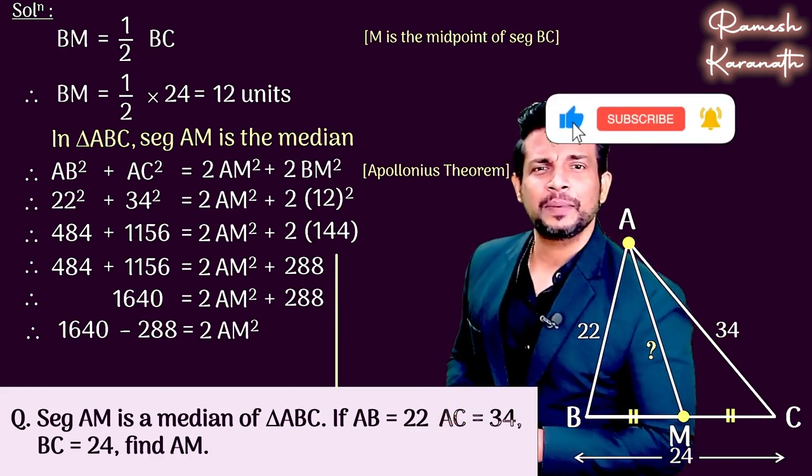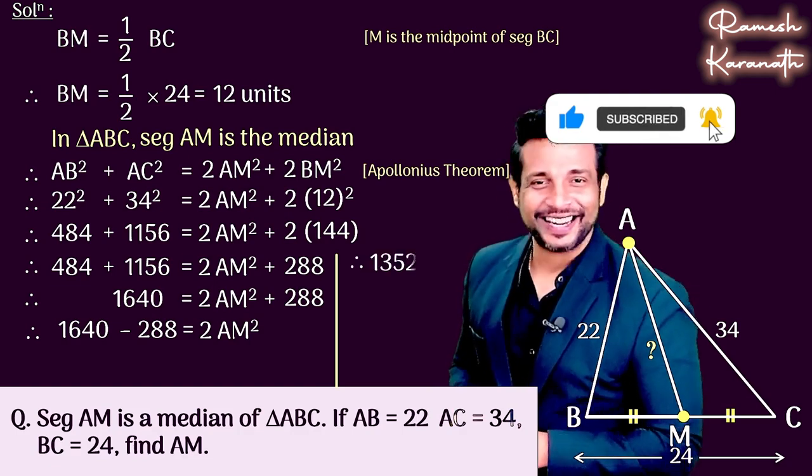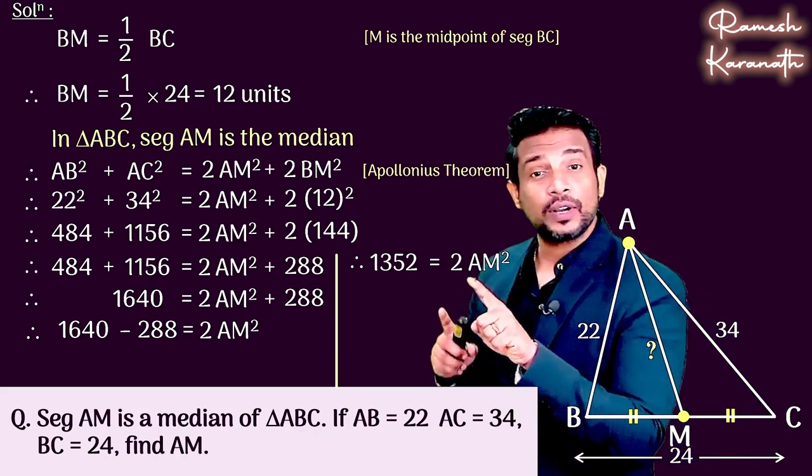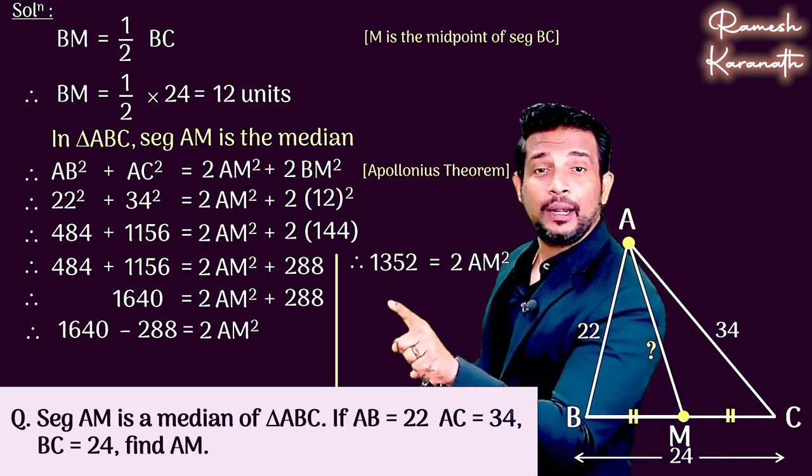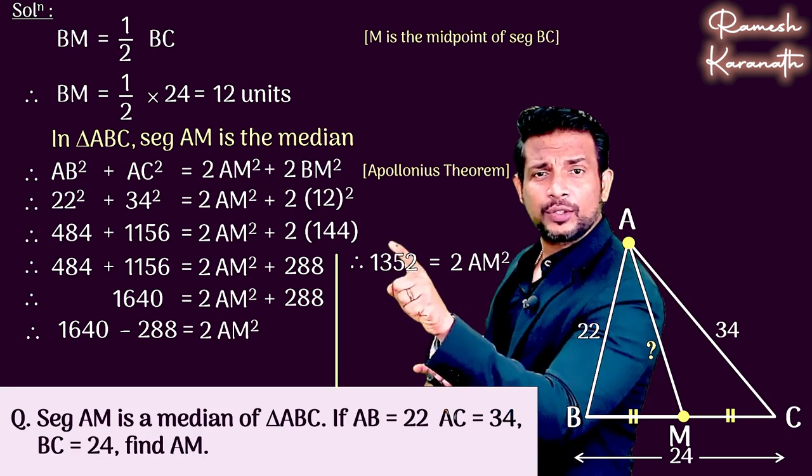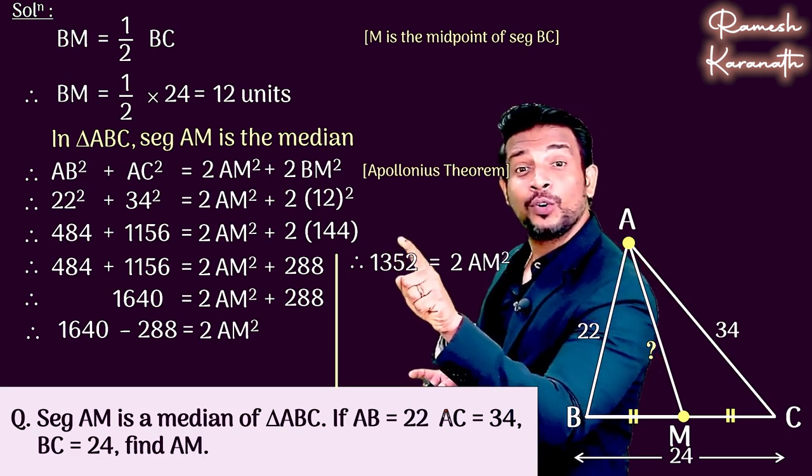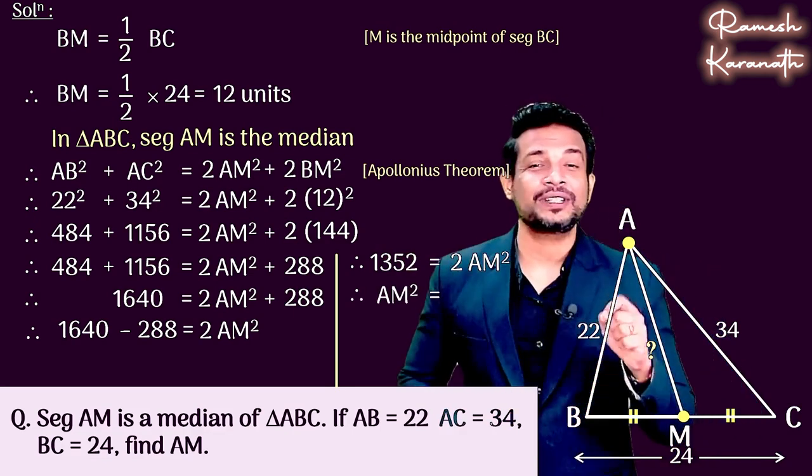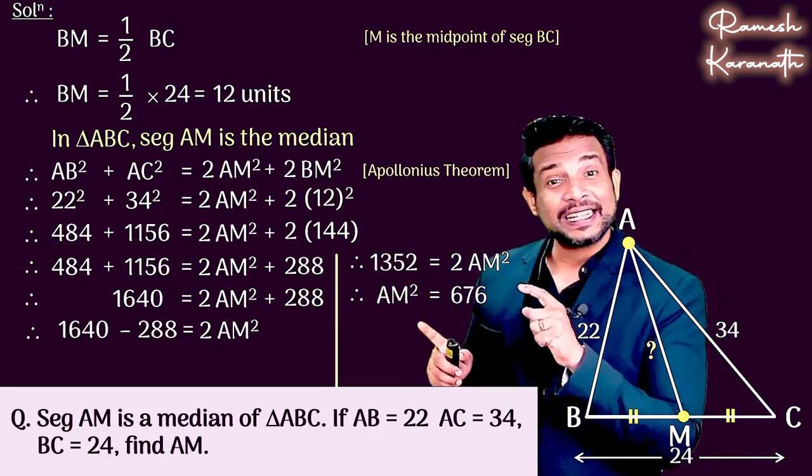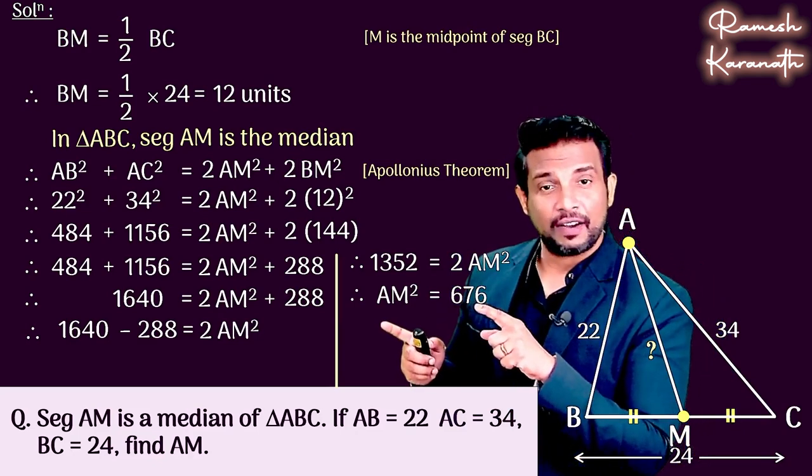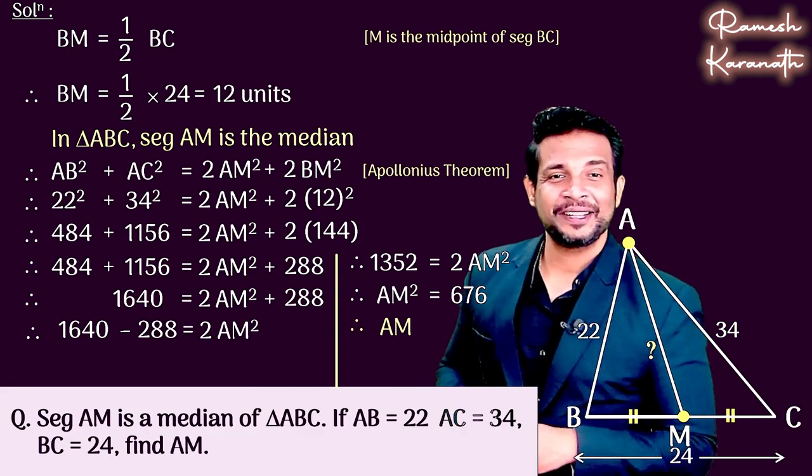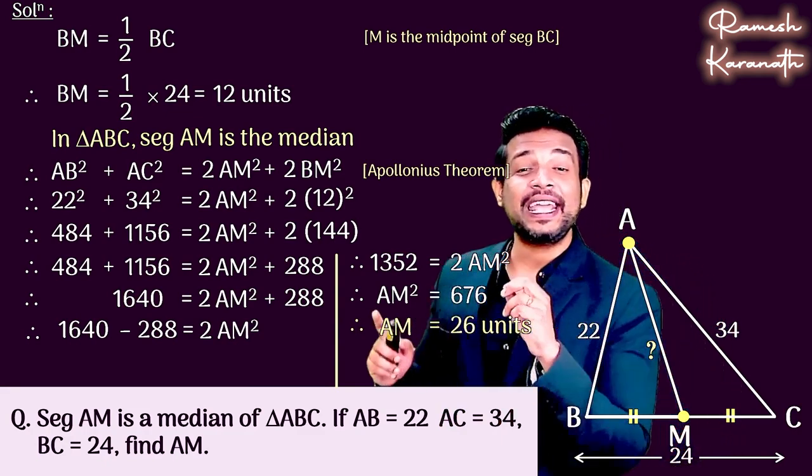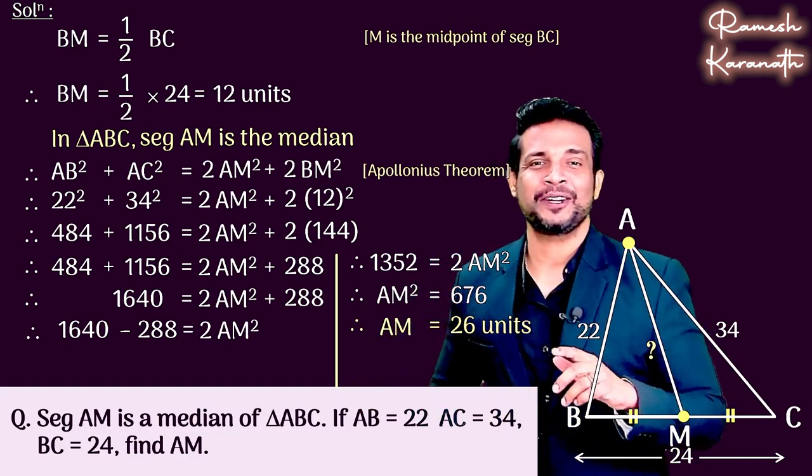1640 minus 288, that is equal to twice of AM square. 1640 minus 288 is 1352. That is equal to twice of AM square. So AM square will be divided by 2. So 2 cancels, 1352 divided by 2 is 676. That means AM square is equal to 676, and AM value is square root of 676, which we know is 26. That means we have AM length, the median length, which is 26 units.